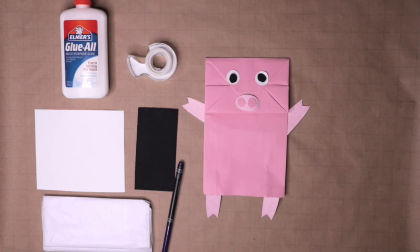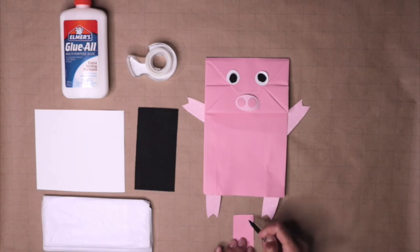Ask a grown up to help cut the paper. Next, we're going to make the ears. I use pink paper and use a marker to draw a triangle.